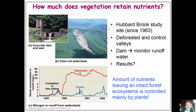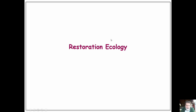The Hubbard Brook study is worth looking up. Researchers took a number of valleys next to their school and measured the amount of nutrients going in and coming out. They found that when they deforested — cut down the forest and left it — many nutrients came out. Yet when the forest was intact, many nutrients did not come out. Forests are very good at keeping their nutrients.